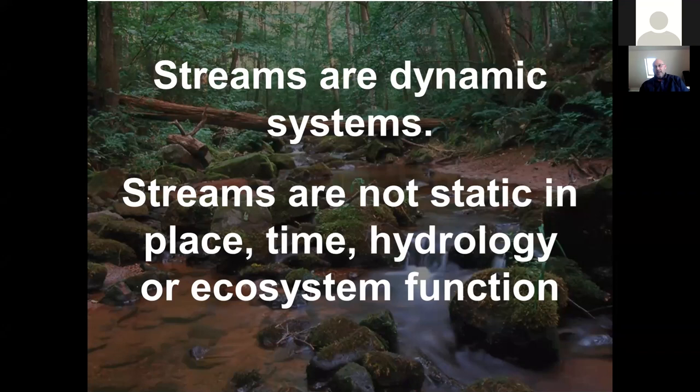The ability of the stream to respond to those changes from a geomorphic and hydrologic standpoint is really critical. And when, in the context of restoration, we try to fix the channel in place — whether that's laterally or for elevation — we really limit the ability of that stream to respond and adapt. As we remove that resilience built into the streams, we might hold something stable for a given reach, but we will have ripples upstream or downstream as things continue to change and the stream is no longer able to be resilient and dynamic through the entire watershed.